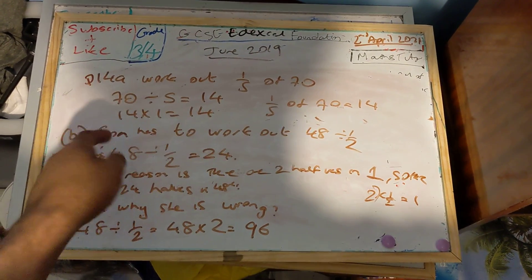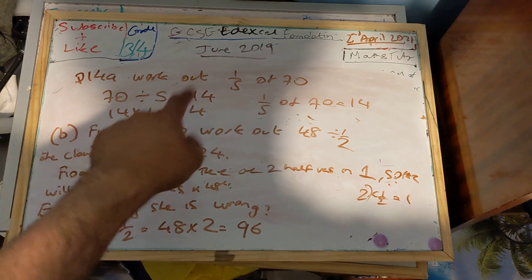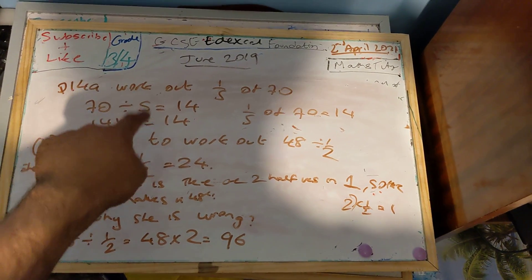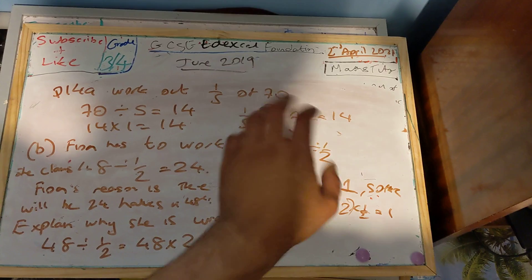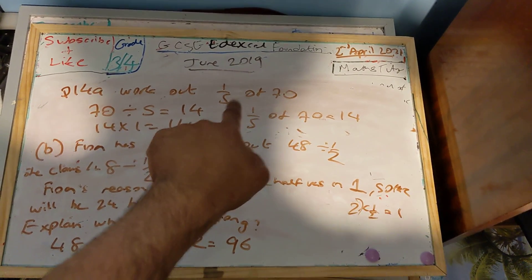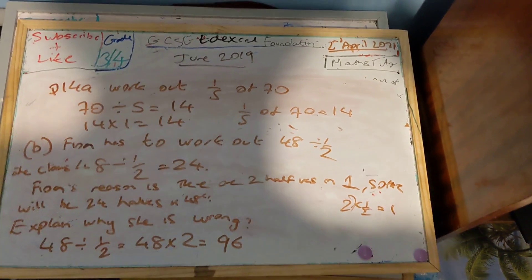A fifth just means dividing by 5. So 70 divided by 5 is 14. Divided by the bottom times by the top, 14 times 1 is 14. So a fifth of 70 equals 14. When it's a fraction of an amount guys, it's dividing by the denominator times your answer by the numerator.